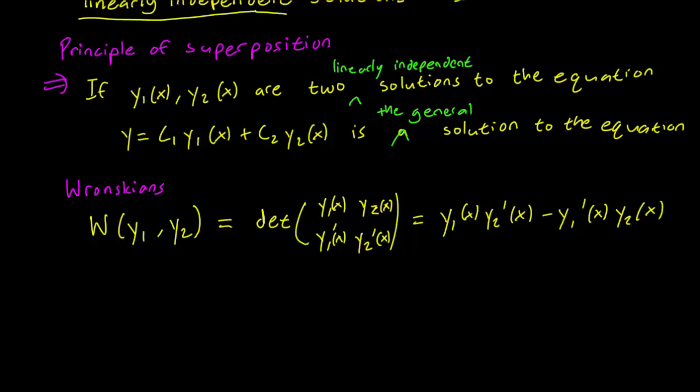The matrix is given by a two-by-two matrix with the top-left entry y1, the top-right entry y2, the bottom-left entry y1', and the bottom-right entry y2'. So if you take the determinant of that matrix, you get y1(x)*y2'(x) minus y1'(x)*y2(x).